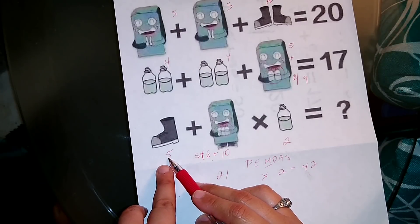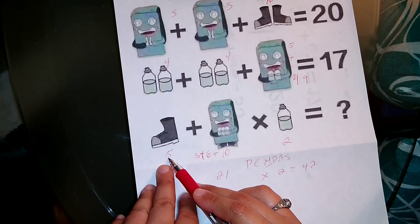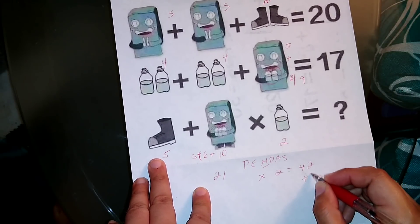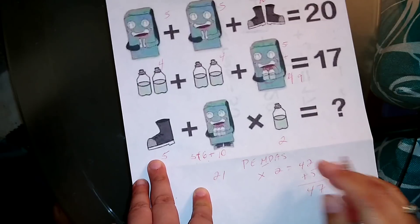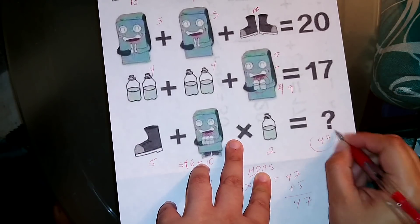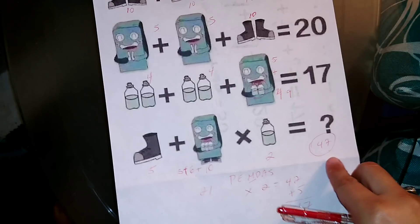And we still have the 5 of the shoe. That's 42 plus 5 is 47. So your question mark here is 47, and that's how you solve that.